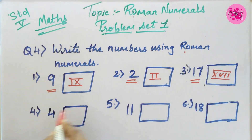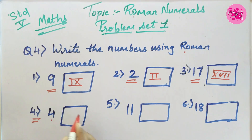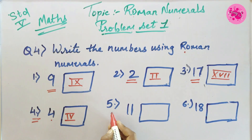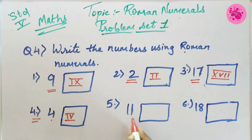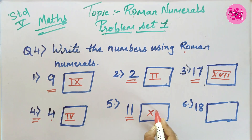Number 4: The number 4 is given, so the answer is IV (I and V). Number 5: The number 11 is given, so the answer is XI (X and I).